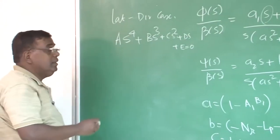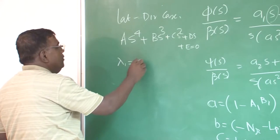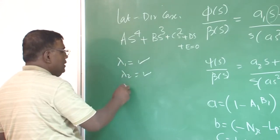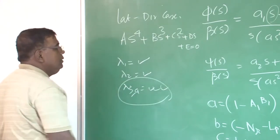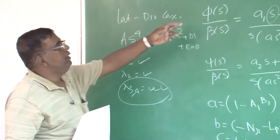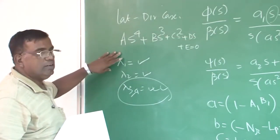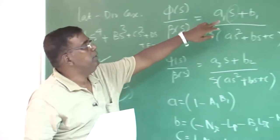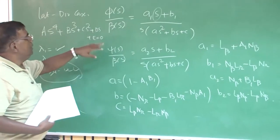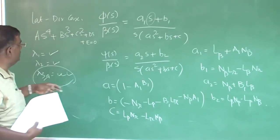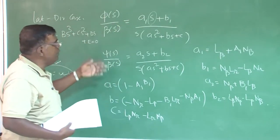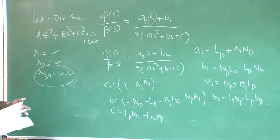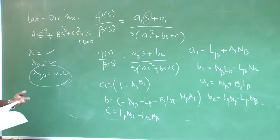So for the lateral directional case, you have lambda_1, lambda_2 as some values, and lambda_3,4 as a complex conjugate pair. This complex conjugate corresponds to dutch roll. So if you want to know phi(s)/beta(s) for spiral mode, put the spiral root value here. Similarly for roll mode. For dutch roll, put that value of s here and get those ratios. Once you know the ratios as complex numbers, you know how to find the magnitude and phase difference. That is as simple as that — not a big deal.